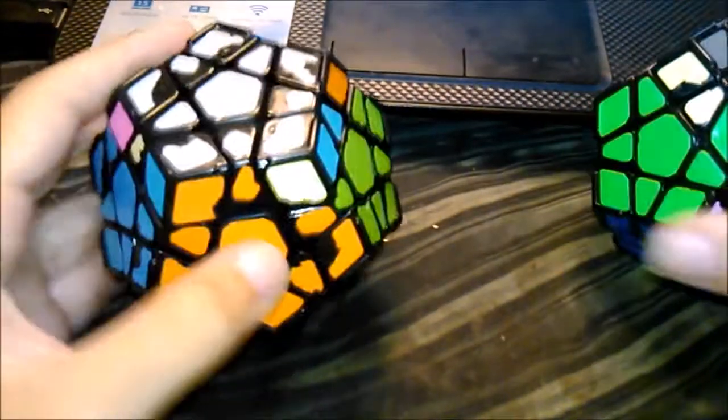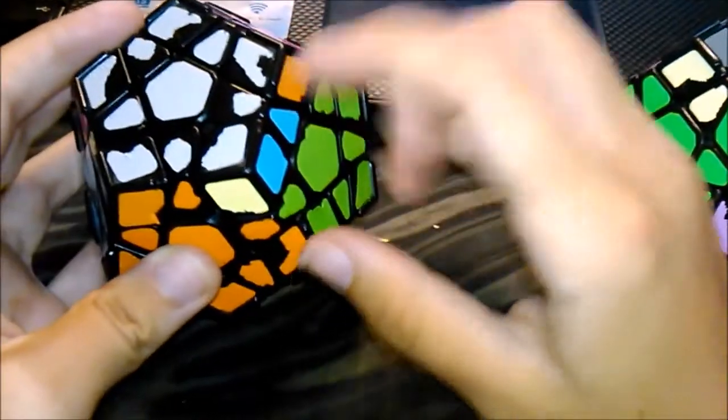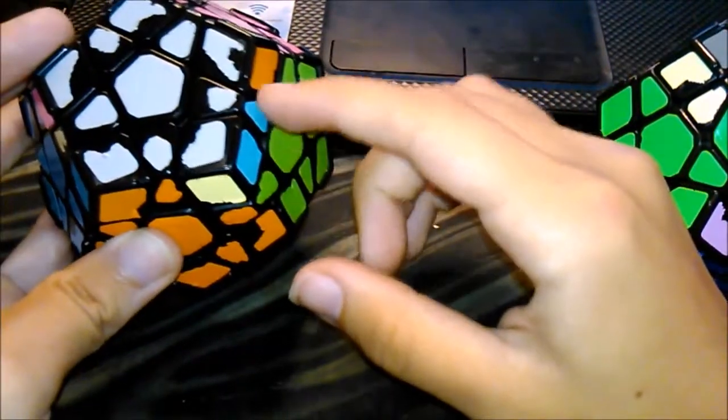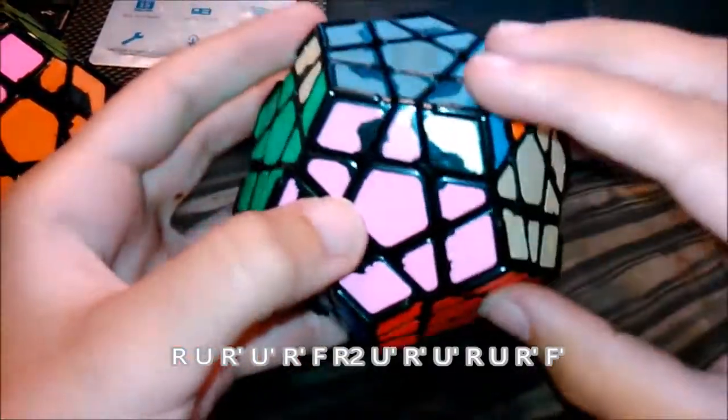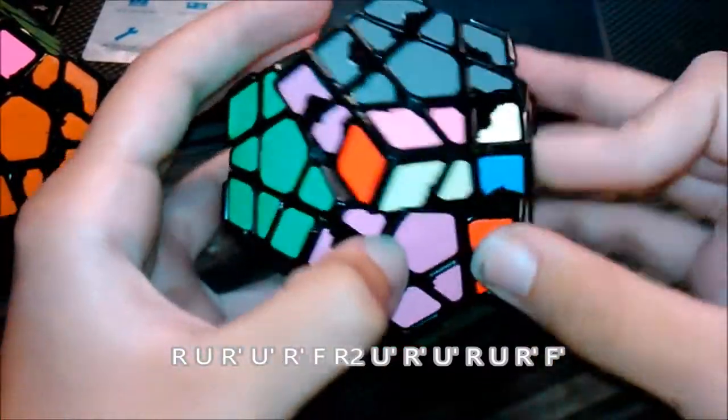So yeah if you get it where two bars this way, U2 Y prime and then you get the case. And then for this case it's just the T-perm algorithm on 3x3.